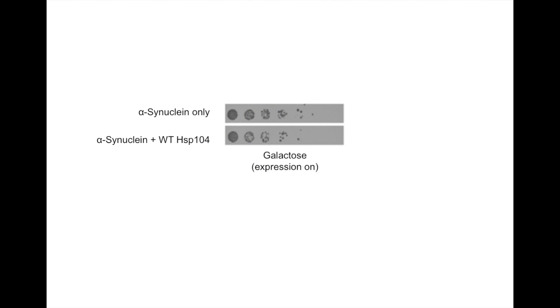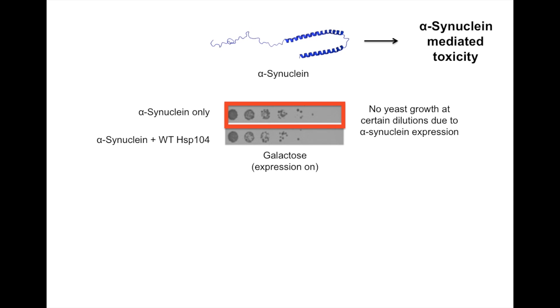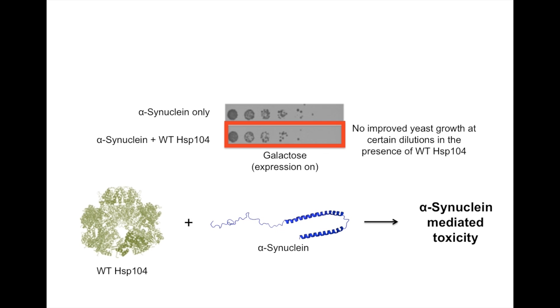Using a yeast toxicity assay, it was shown that expression of alpha-synuclein in yeast causes toxicity. However, when wild-type HSP-104 was expressed in the presence of alpha-synuclein, it was insufficient to rescue alpha-synuclein-mediated toxicity.